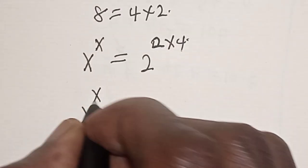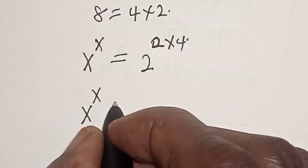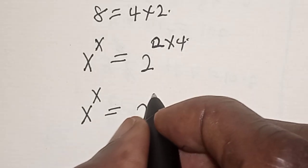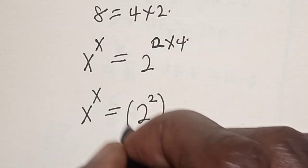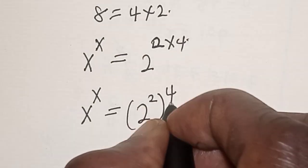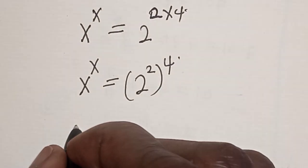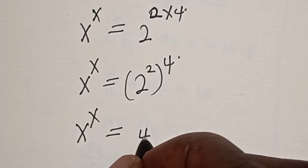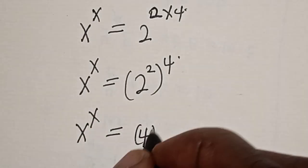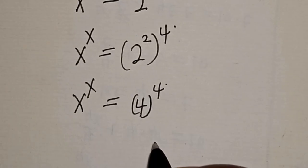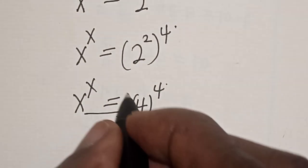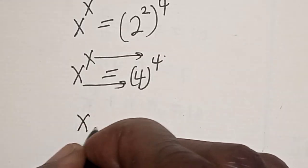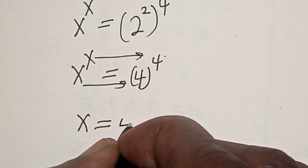s raised to power s is equal to 2 raised to power 2, then raised to power 4. So s raised to power s is equal to 4 raised to power 4. Now, by comparing, this is equal to this and this is the exponent. So s is equal to 4.